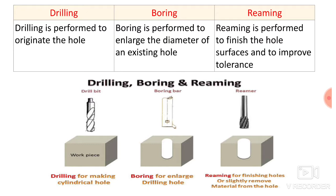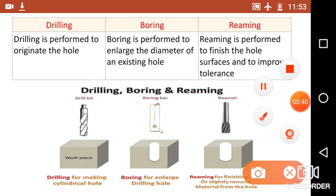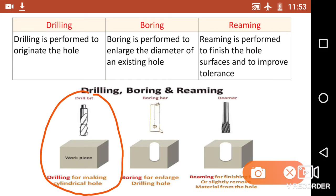The very first point is drilling is performed to originate the hole. Here in this diagram you can see the first diagram — a solid workpiece is there and a drill bit is used for originating the hole in the workpiece. Drilling is used for making a cylindrical hole. Initially the workpiece must be solid, and then you have to use the drill bit to originate the hole. That is the purpose of drilling operation.